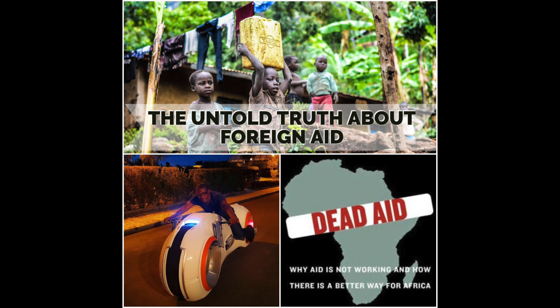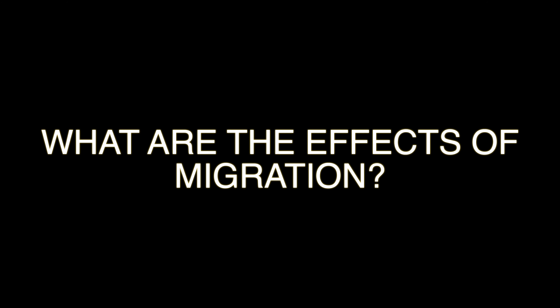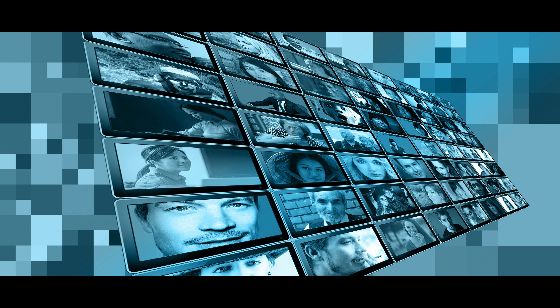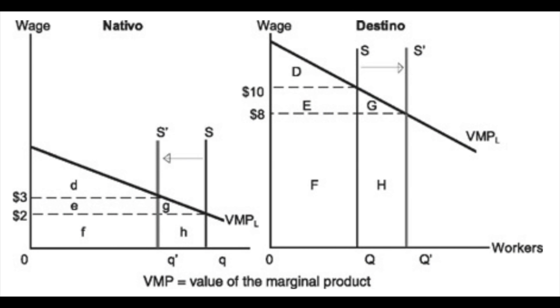In the previous video we talked about development aid — you can check it if you missed it. Today's question is: what are the effects of migration from the perspective of the country of origin and of destination? Migration occurs for various reasons; the immigrant groups can be composed of temporary workers, professionals, asylum seekers, refugees, and others.